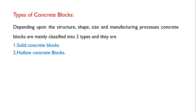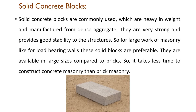Under concrete blocks, there are two types: solid concrete blocks and hollow concrete blocks. Solid concrete blocks are commonly used, are heavy in weight, and are manufactured from dense aggregate. They are very strong and provide good stability to structures, and are preferred for large load-bearing masonry work.